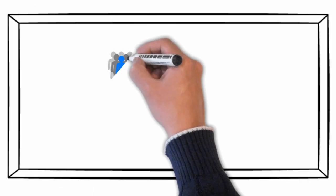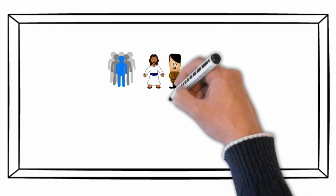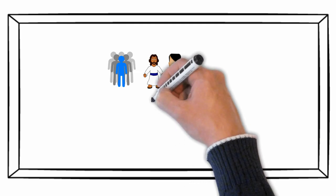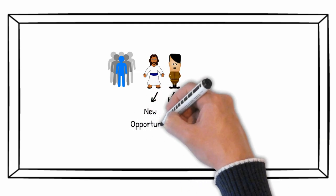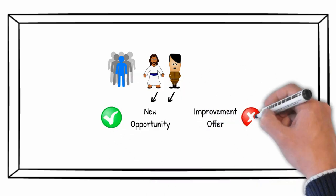When Russell studied leaders of huge movements throughout history, like Jesus Christ and Adolf Hitler, he found out that one of the things that they all had in common is that they all presented a new opportunity, not an improvement offer.